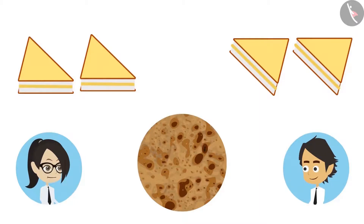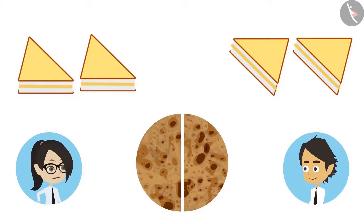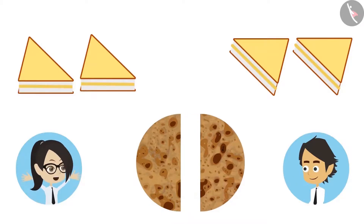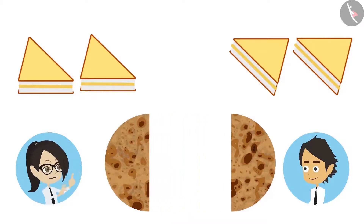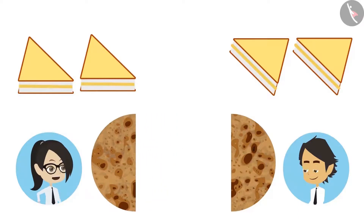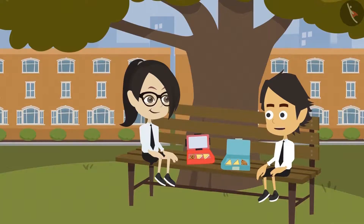This is very easy. We will cut it from the middle. Now look, we made two equal halves of one paratha. Now you eat one part and I will eat one part. This means objects can be counted and divided to make a half.